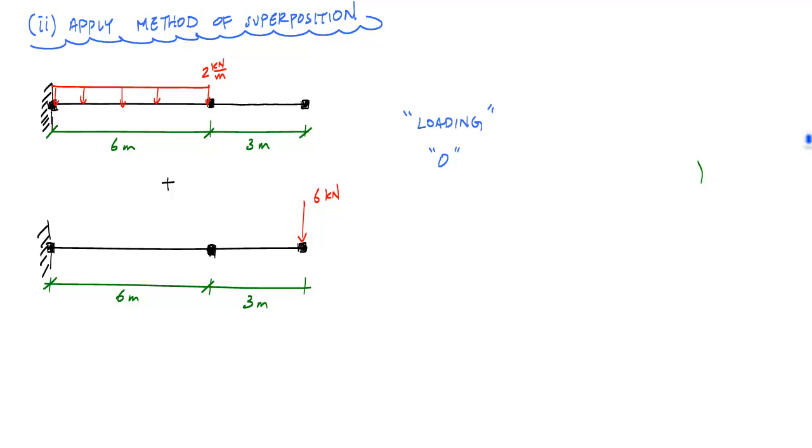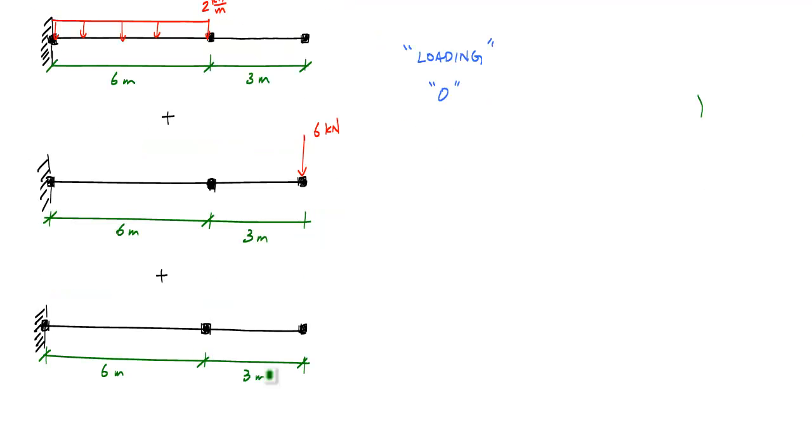Next, what I want to draw is my redundant structure. For my redundant structure, I'm going to reintroduce the reaction at point B, which was six meters from the fixed support, as an external load applied like this. This is my redundant structure. Since there's only one redundant, or really this is the first redundant, I'll call this my one structure. What this means is that the sum of all three of these will give me my original structure, the problem that was initially stated at the beginning.